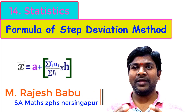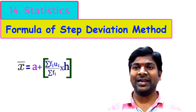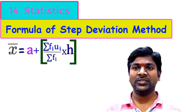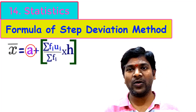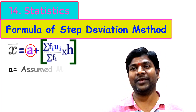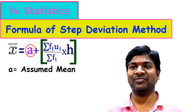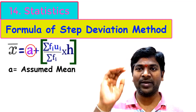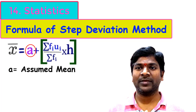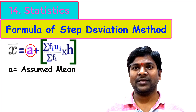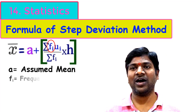To apply the formula, we need to know the literal terms. 'a' is the assumed mean or arbitrary mean — usually taken from the mid values of the classes. One of the mid values of the classes can be considered as the assumed mean. 'fᵢ' is the frequency of each class, and Σfᵢ is the sum of all frequencies.